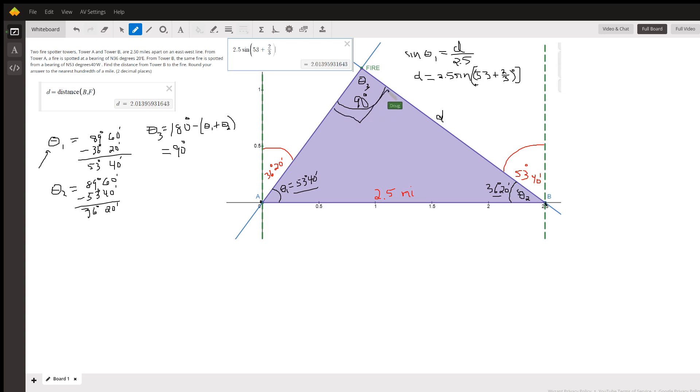So we can use right triangle trigonometry to solve for this distance right here, the distance from B to the fire. The sine of theta sub 1 equals opposite, which I labeled d, over the hypotenuse which is 2.5. So d equals 2.5 times the sine of 53 degrees 40 minutes.